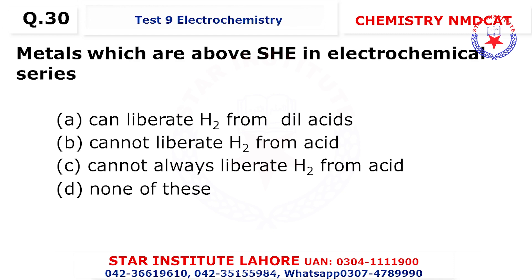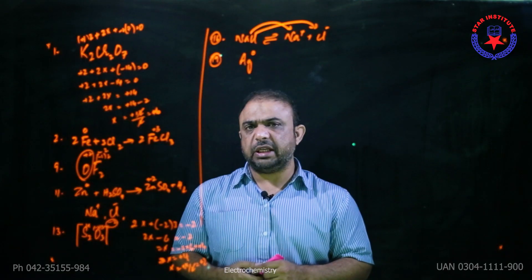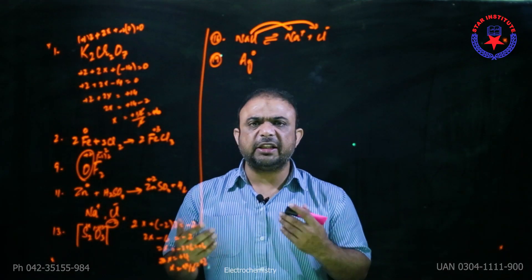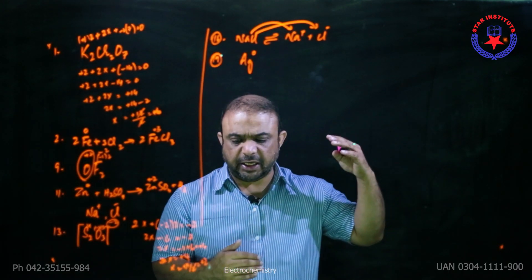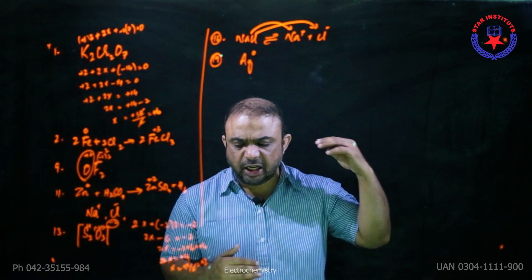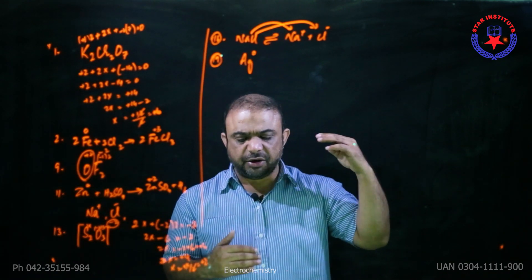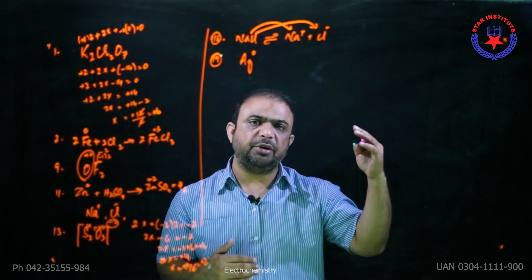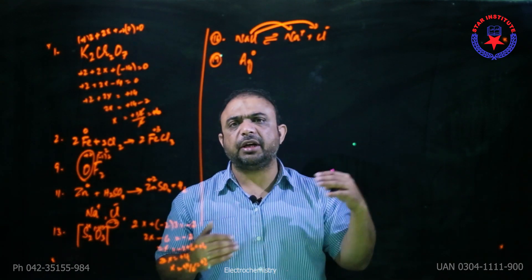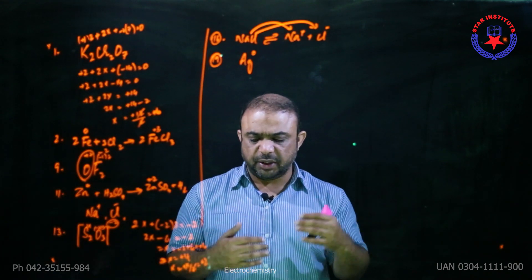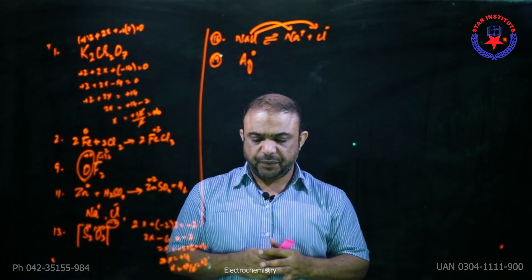Question 30: metals which are above SHE in the electrochemical series — which is also your reactivity series — can liberate hydrogen gas with dilute acid. This is one way to determine reactivity. The choice is alpha.